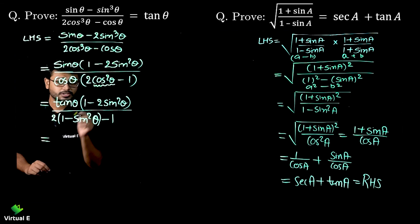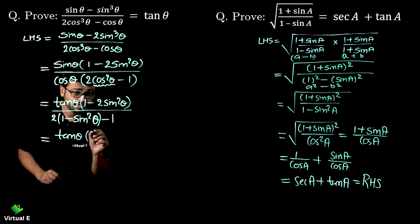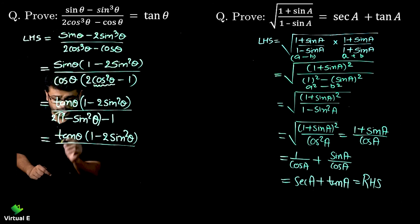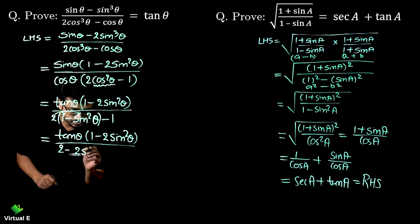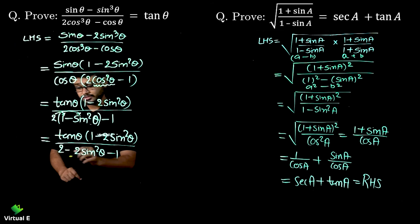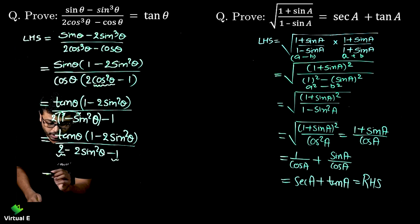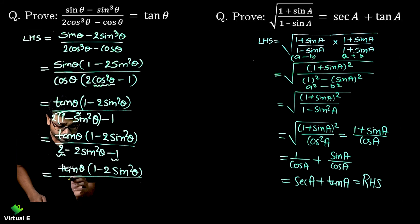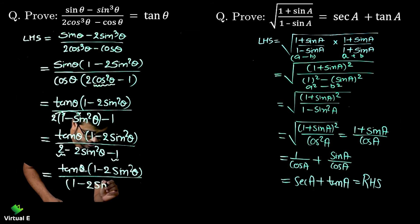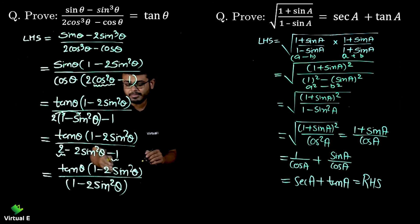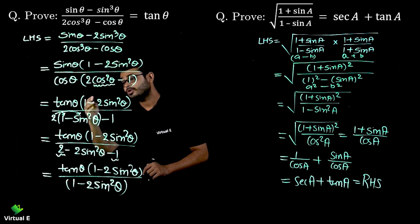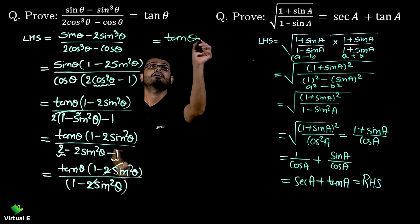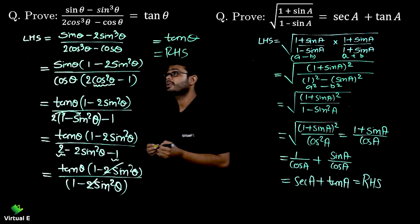The numerator stays as (1 - 2sin²θ). Opening the denominator bracket: 2×1 = 2, minus 2sin²θ, minus 1, which gives (1 - 2sin²θ). So now we have tanθ × (1 - 2sin²θ) / (1 - 2sin²θ). The term (1 - 2sin²θ) cancels in numerator and denominator, leaving only tanθ, which is our RHS.